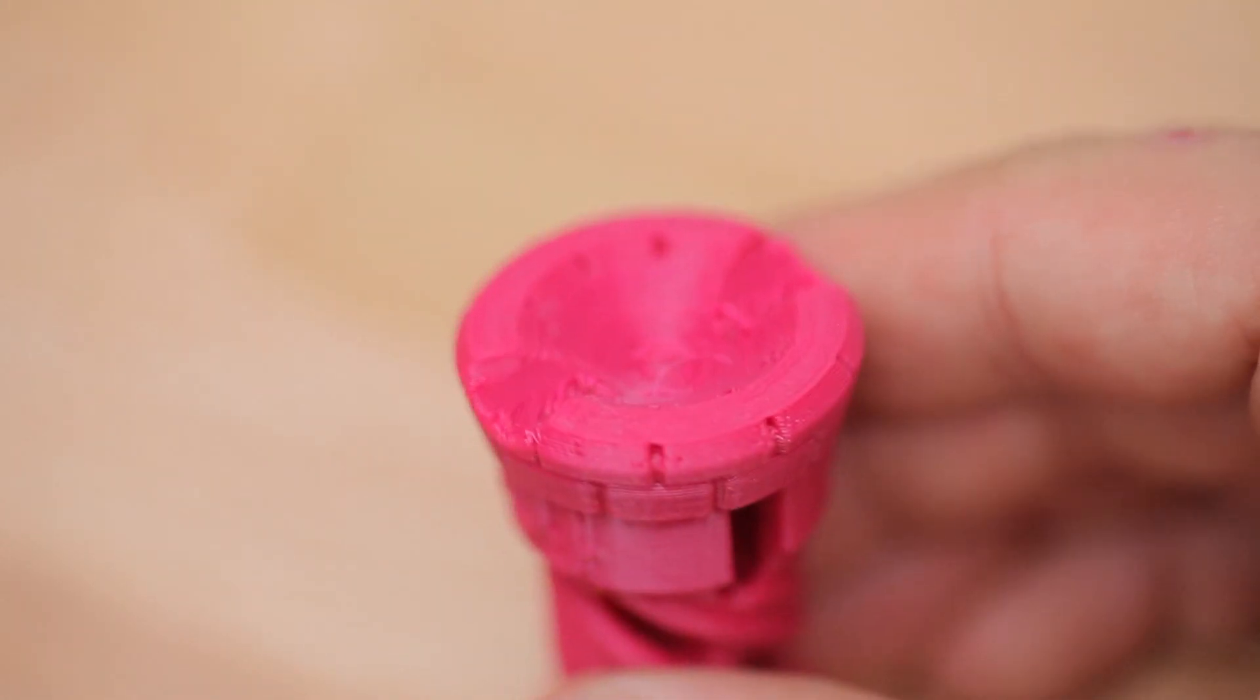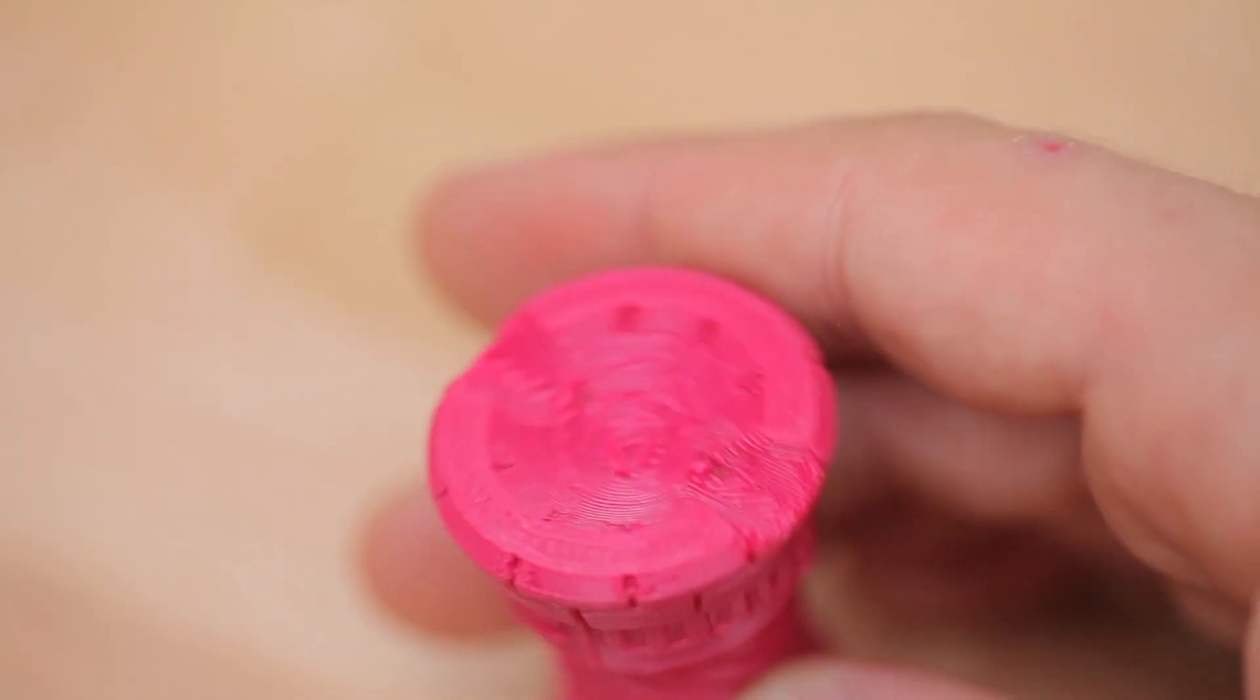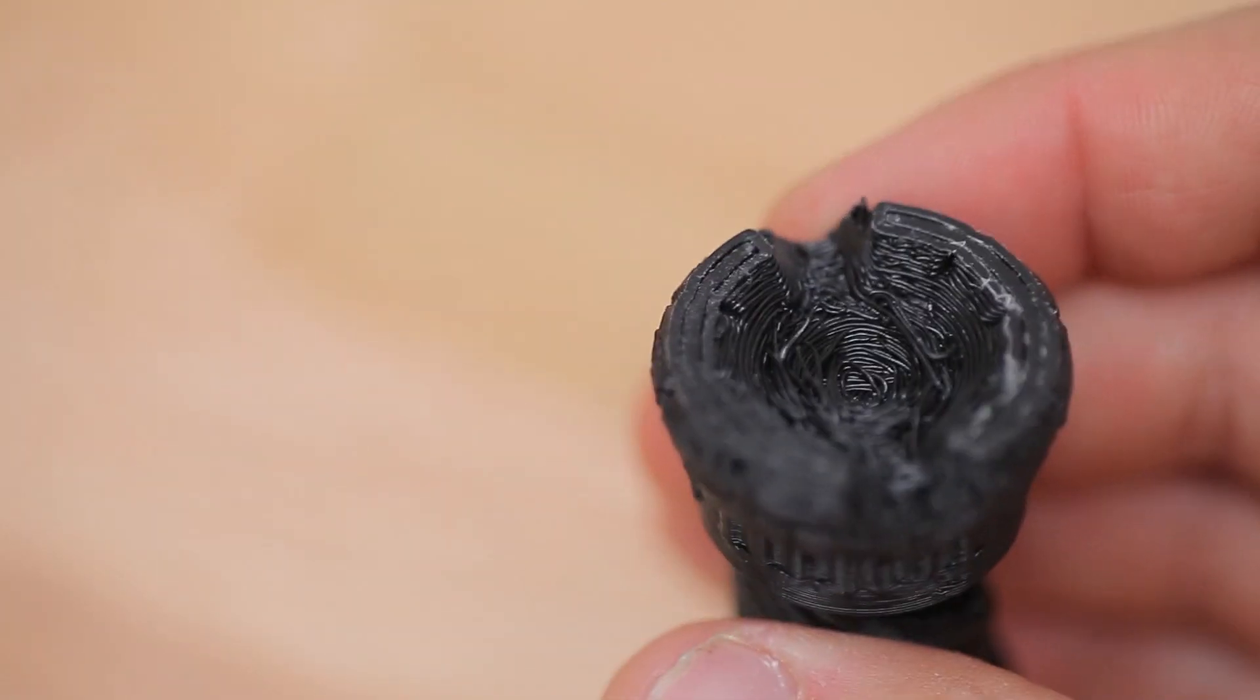And compared to the Formlabs parts, this looks actually almost quite as nice. The PLA part looks pretty okay, it has a couple strings where you can see the filament sagging, but other than that it's pretty good.